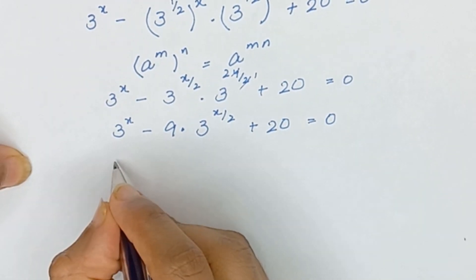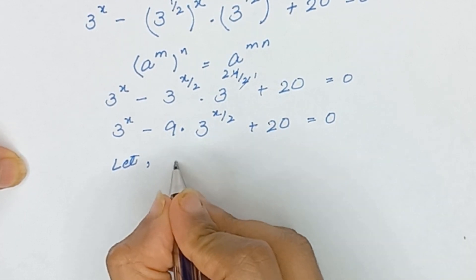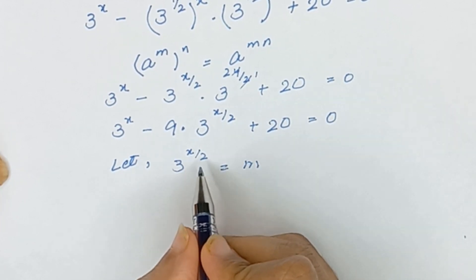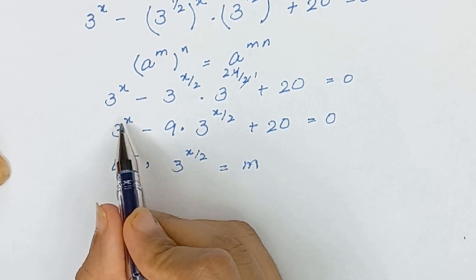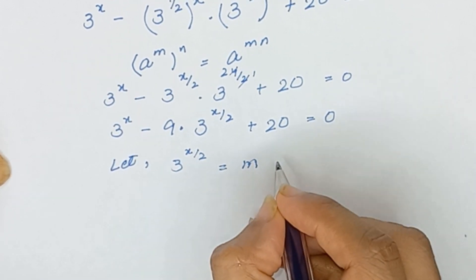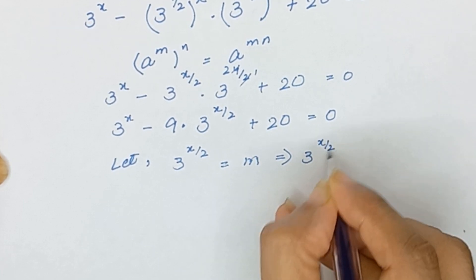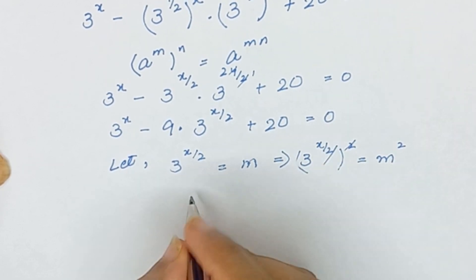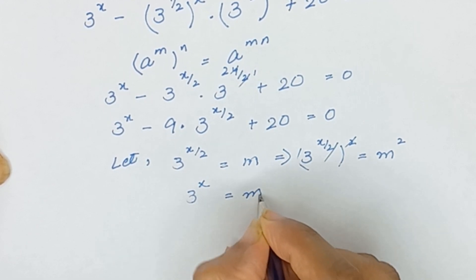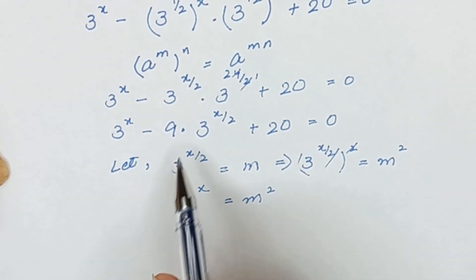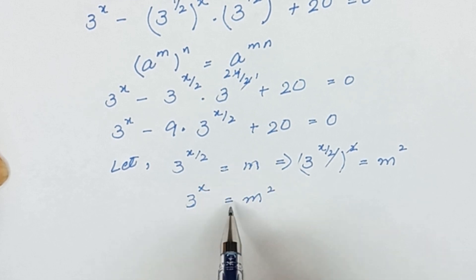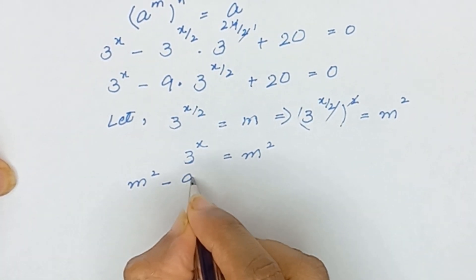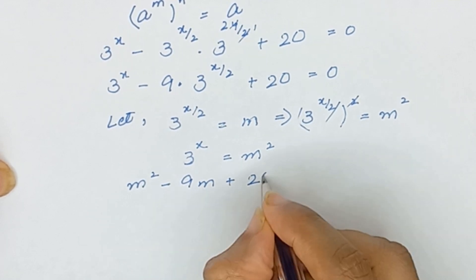Now we will let 3 to the power x divided by 2 equal to m. If we apply square on both sides, the square and square root cancel out and 3 to the power x will be equal to m squared. So our equation becomes m squared minus 9 times m plus 20 is equal to 0.